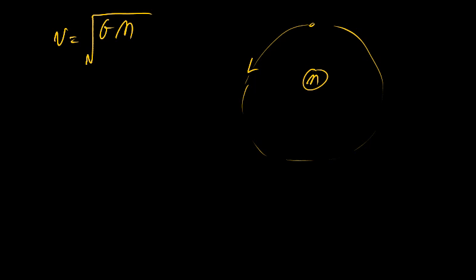In the last video, we derived the orbital speed of an object as the square root of G, the gravitational constant, times the mass of the large object that is orbiting, over the size of the orbit.